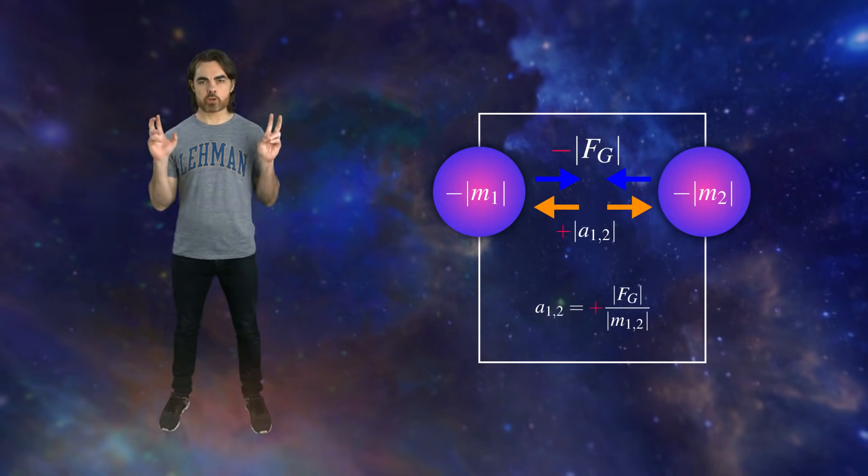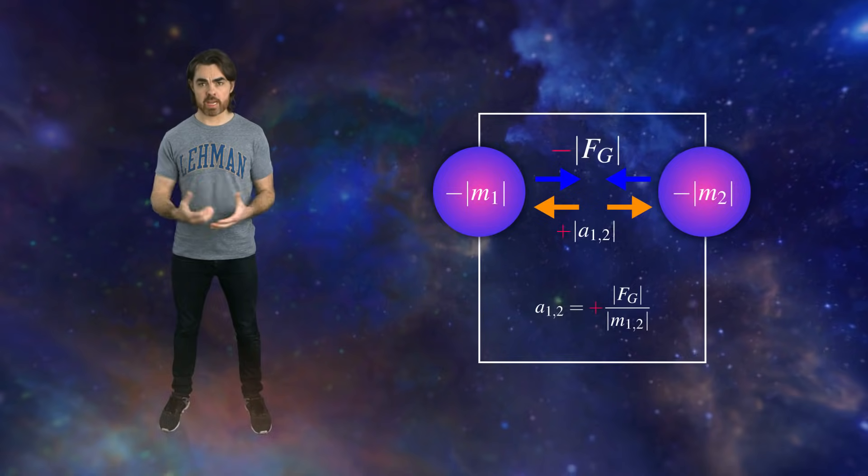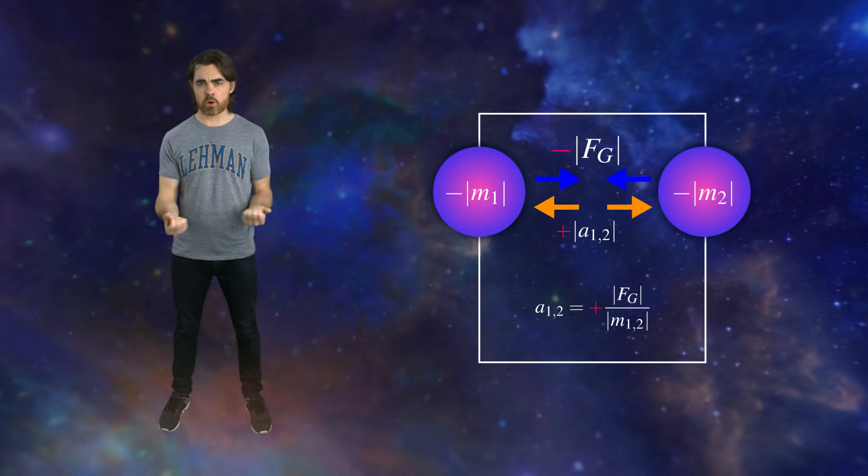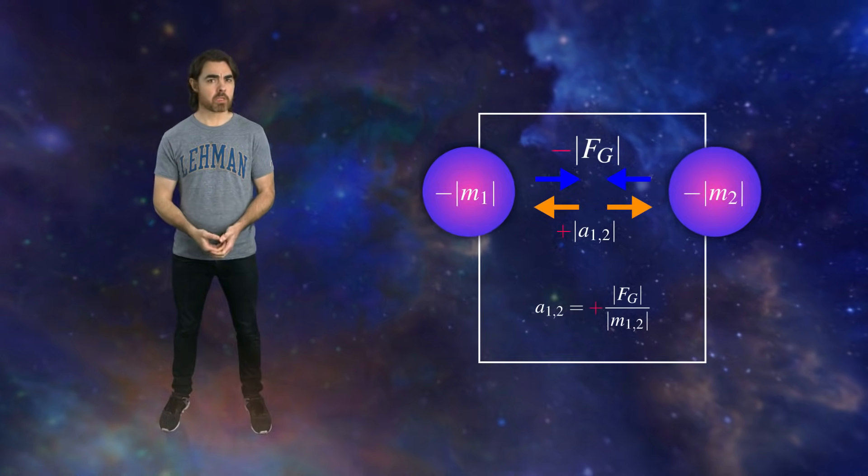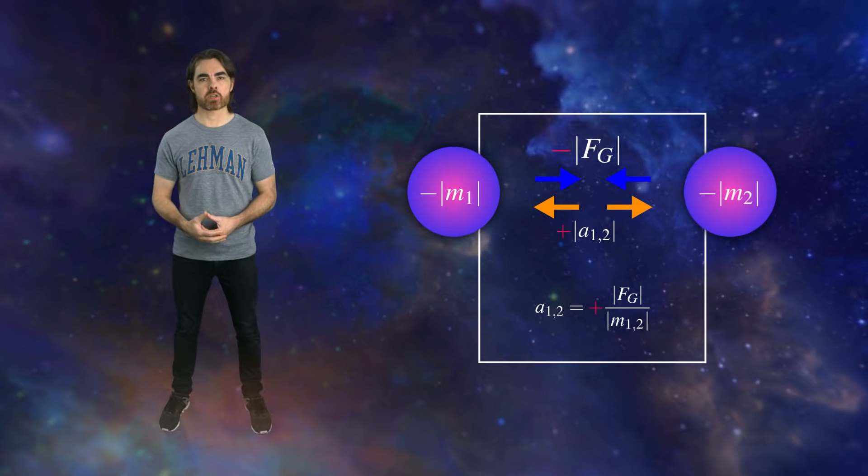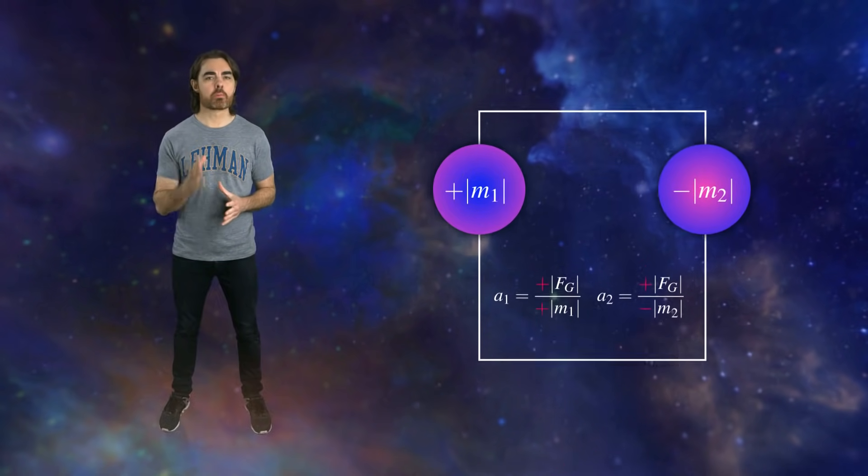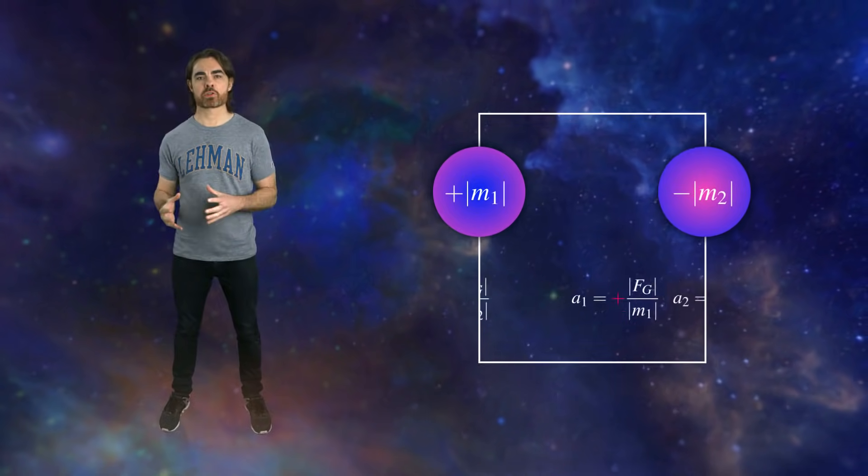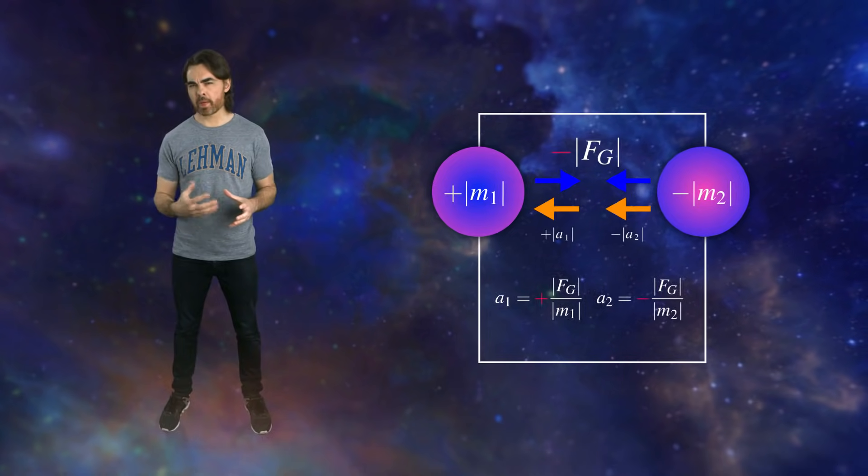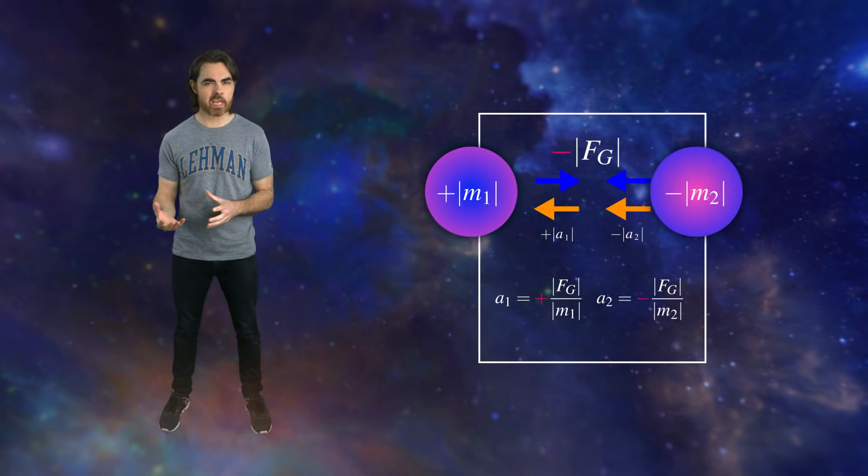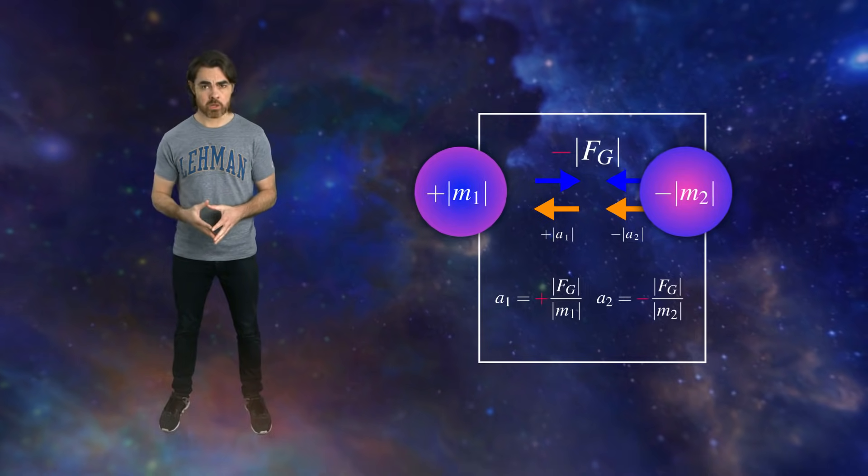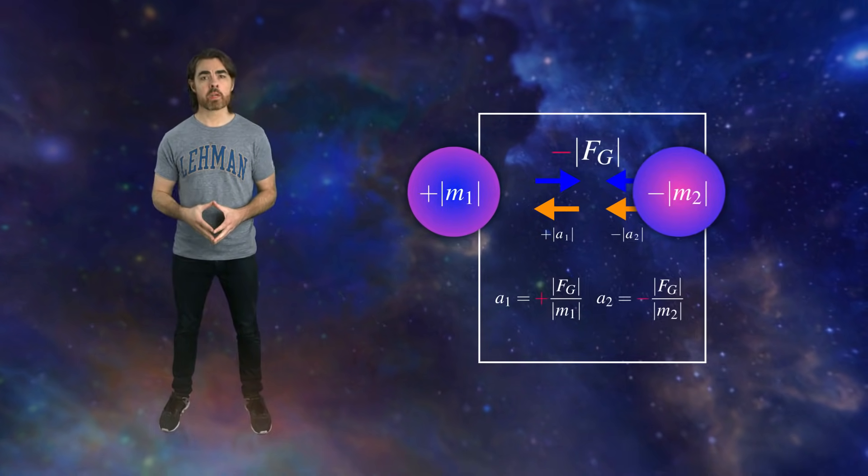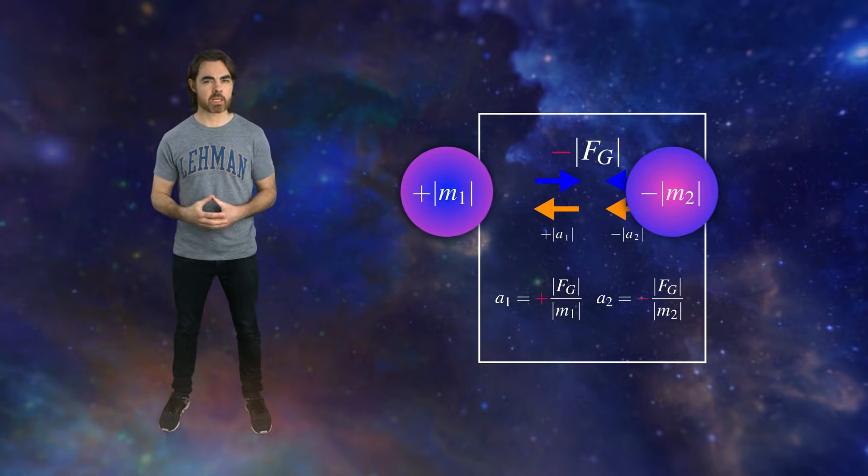So Farnes argues that the attractive gravitational force between two negative masses should actually drive them apart. This is supposed to give the outward push to replace dark energy. At the same time, the repulsive force between a negative and positive mass should repel the positive mass and attract the negative mass. That's a bizarre situation, but as I'll explain in a moment, it'll give us our dark matter replacement.